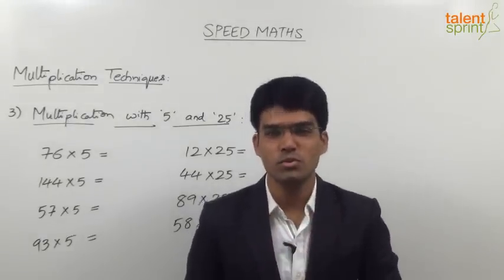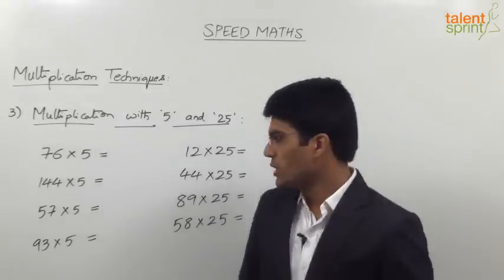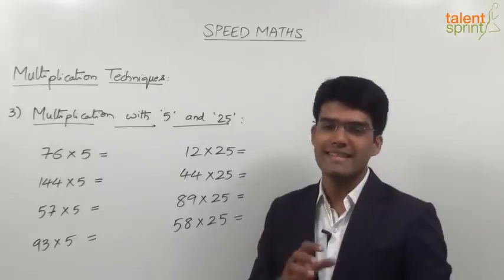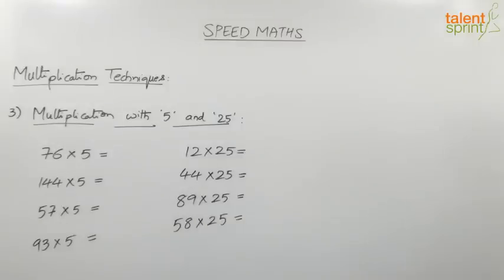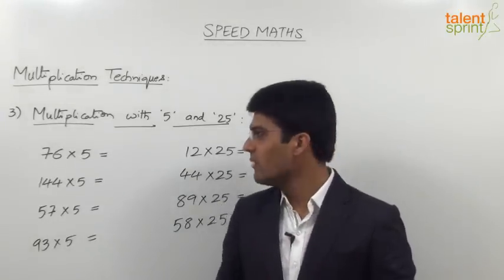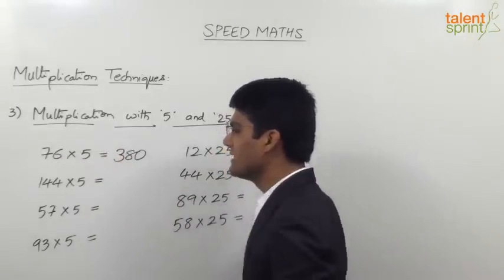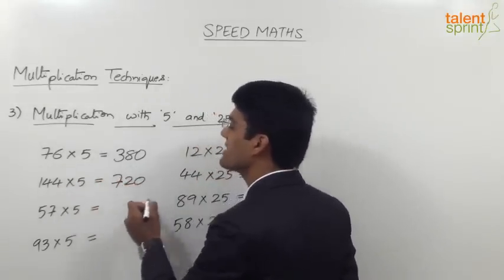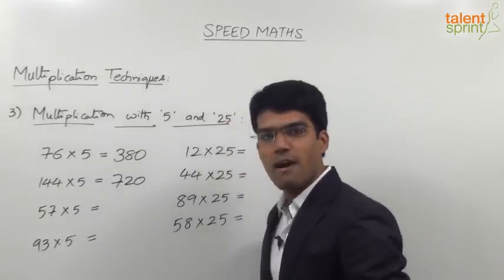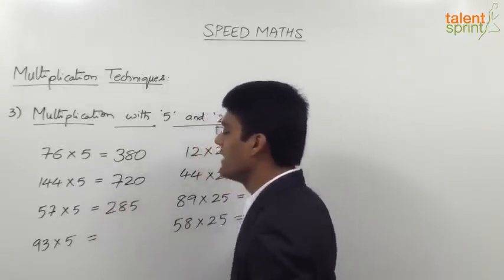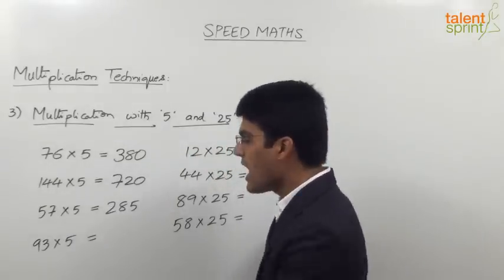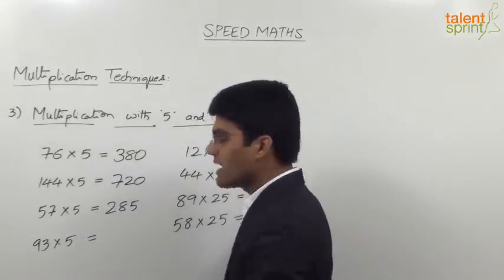Here comes the exercise for multiplication with 5 and 25 — eight questions with 10 seconds to answer. For the multiplication-with-5 questions: 76 into 5 — half is 38, so the answer is 380. 144 into 5 — half is 72, so the answer is 720. 57 into 5 — half is 28.5, so the answer is 285. 93 into 5 — half of 93 is 46.5, so the answer is 465.